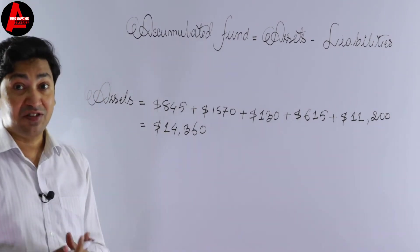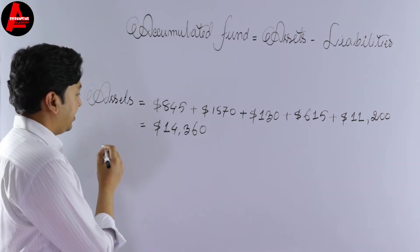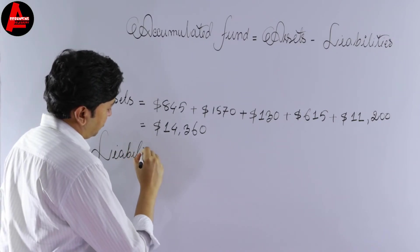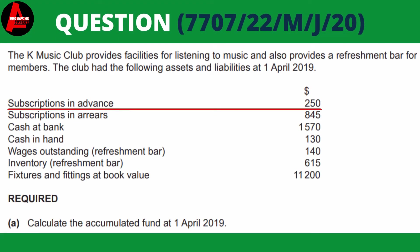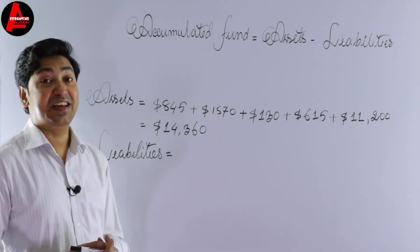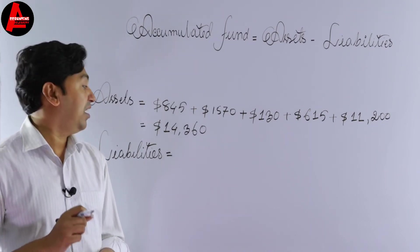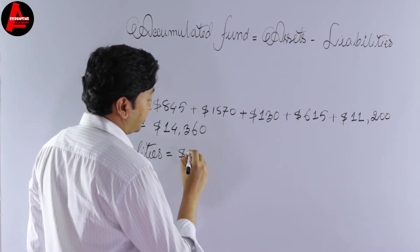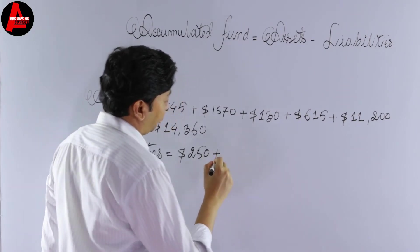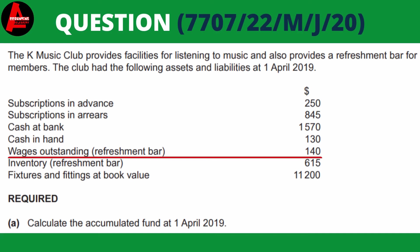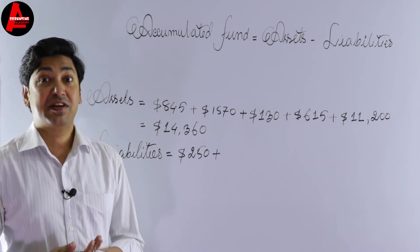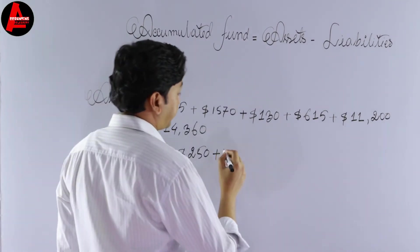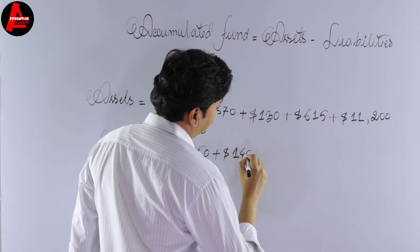Now we need to calculate total liabilities. Liabilities equals: first, subscription in advance $250 — yes, it is a liability, so we write $250. Then wages outstanding $140 — this is also a liability, so we write $140.